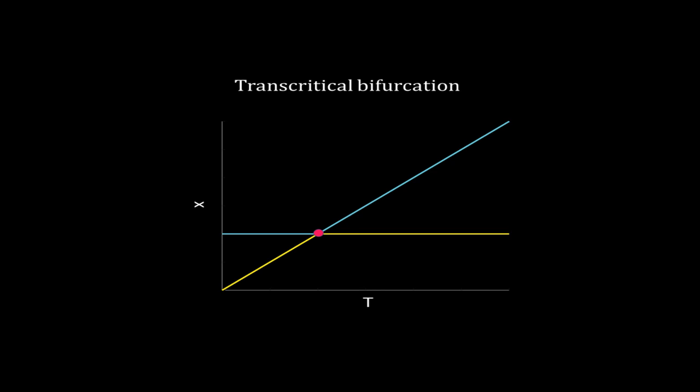This one is called transcritical bifurcation. Here also the blue lines are the stable steady states and the yellow lines are for unstable. In transcritical bifurcation, a stable and an unstable steady state coexist, and beyond the bifurcation point these steady states exchange their stabilities.